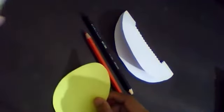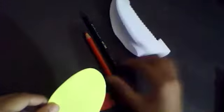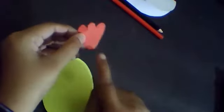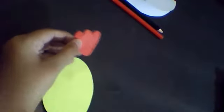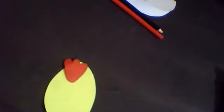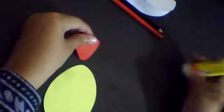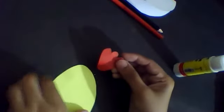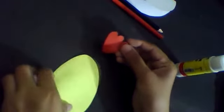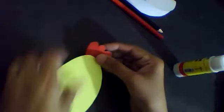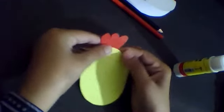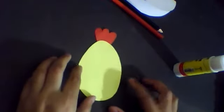First of all, you have to take this oval and this red cutout. Put some glue on the lower side. Apply some glue on the lower part and paste it right there. Paste it very well, okay? Like this.